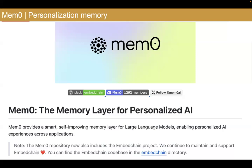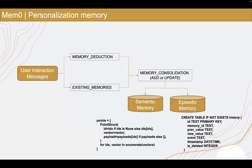Looking at the Mem0 memory solution they have released, it looks like they are focusing more on personalization — how I can remember user preferences, and when the same user comes back to interact with the language model, how I can remember preferences from past interactions and make the current conversation more contextual and hyper-personalized for the user.